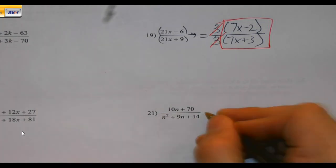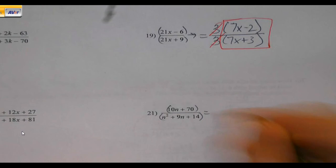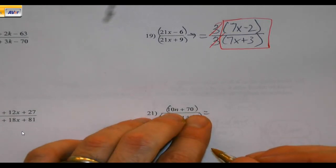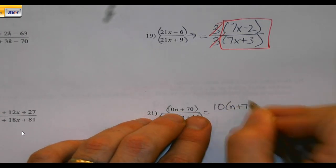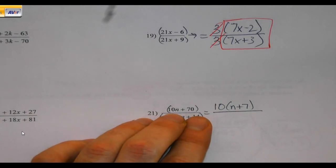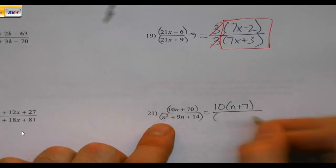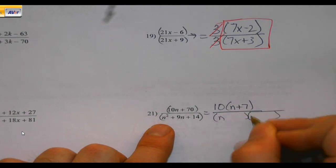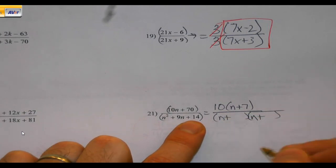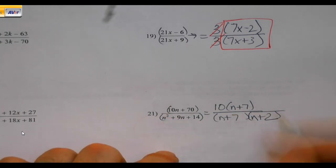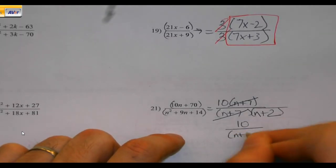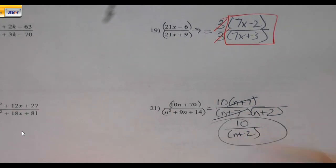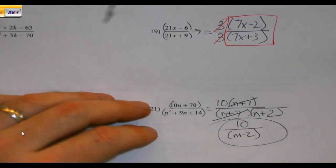21. No parentheses. I put them in. Anything in common? Yes, 10 is in common. So I divide that into the 10 and divide that into the 70. Looks like a diamond. Multiplies to a positive. Adds to a positive. Multiplies to 14. Adds to 9. 7 and 2. Identical parentheses can go away. But stuff that's in parentheses cannot cancel. Don't reduce that 20 and 2.